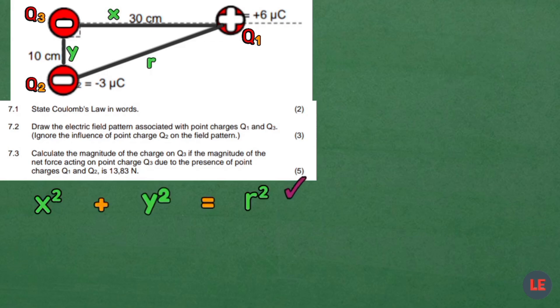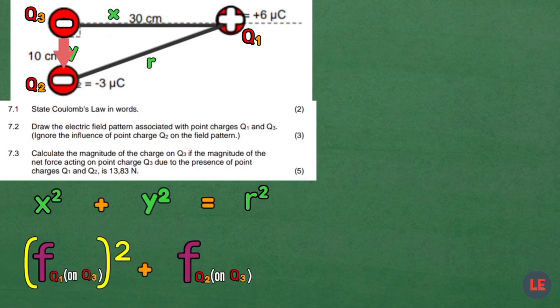We use the Pythagorean theorem: Force Q1 on Q3 to power 2 plus Force Q2 on Q3 to power 2, all equal to the net force to power 2.